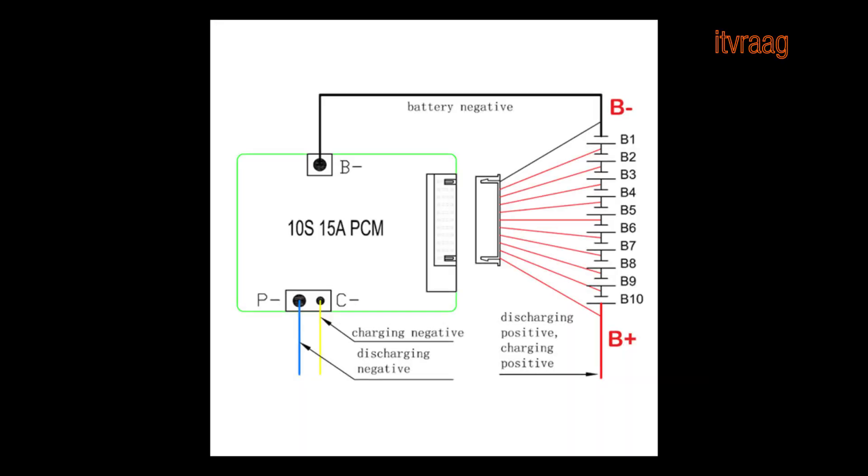The BMS that I'm using has separate cables for charging and discharging. The yellow one is for charging and the blue one is for output, in my case the motor. Here are the schematics for the connections.